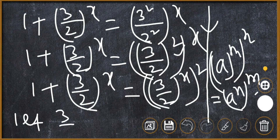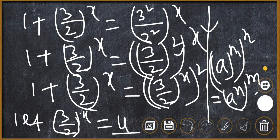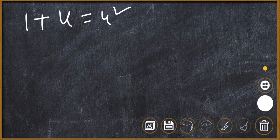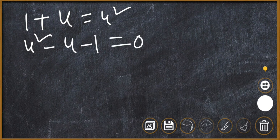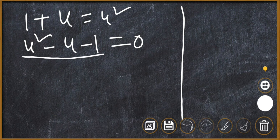Let (3/2)^x equal u. Then we get 1 plus u is equal to u squared, which gives us u squared minus u minus 1 is equal to 0. This is a quadratic equation.